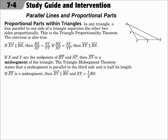In any triangle, a line parallel to one side of a triangle separates the other two sides proportionally. This is the Triangle Proportionality Theorem, and the converse is also true. When that happens, you can make a proportion with the other two side lengths.